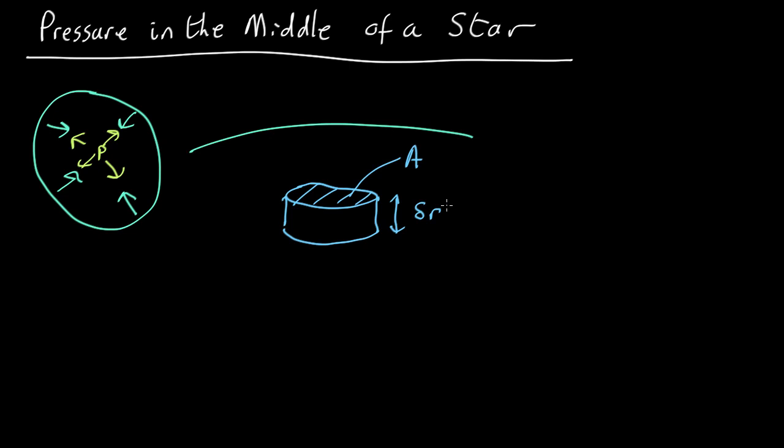And this cylinder is going to want to have a mass. The mass of the cylinder is going to be its volume, which is A area times the thickness, delta R, times the density rho. We're going to assume, unrealistically, that the density is constant throughout the star for this calculation. In reality, of course, density increases towards the middle. But this approximation will get us a rough answer. So we've got that. That's the mass.